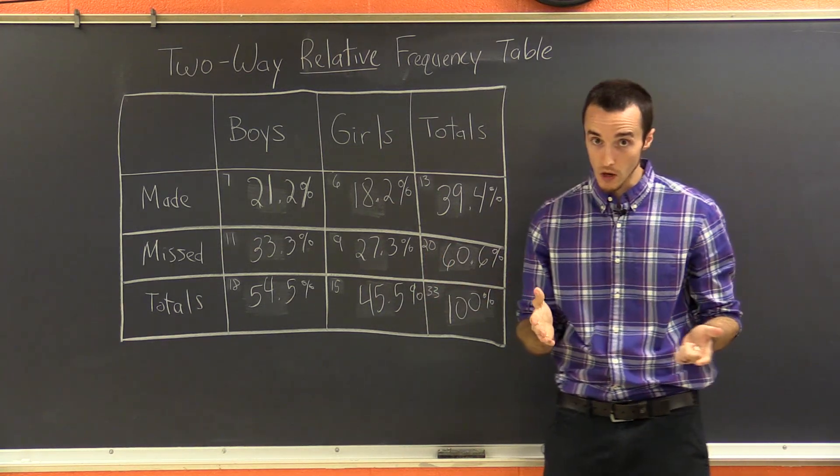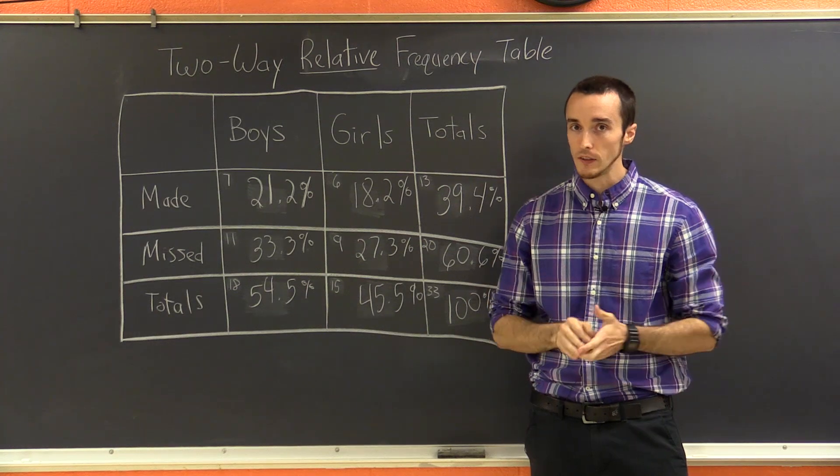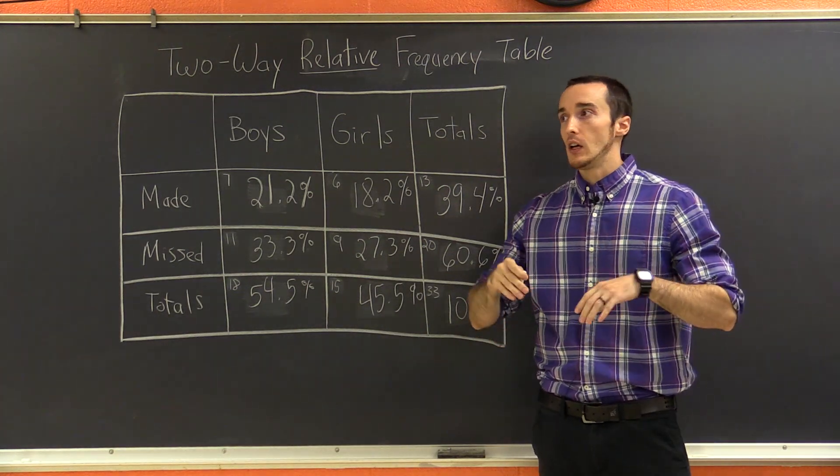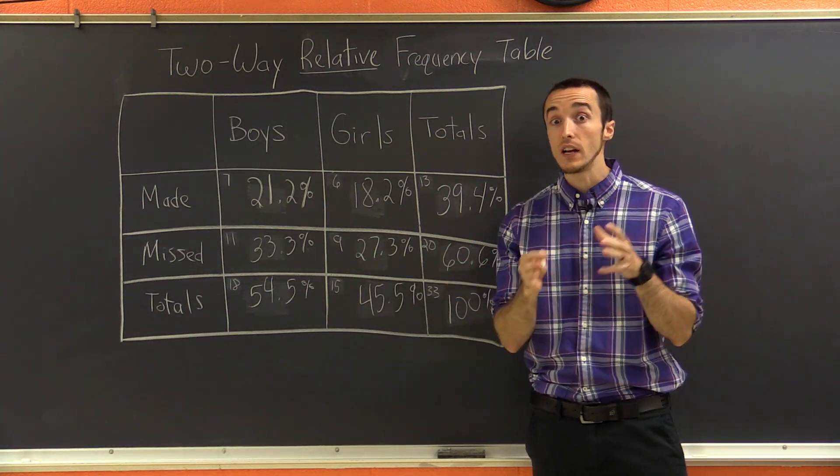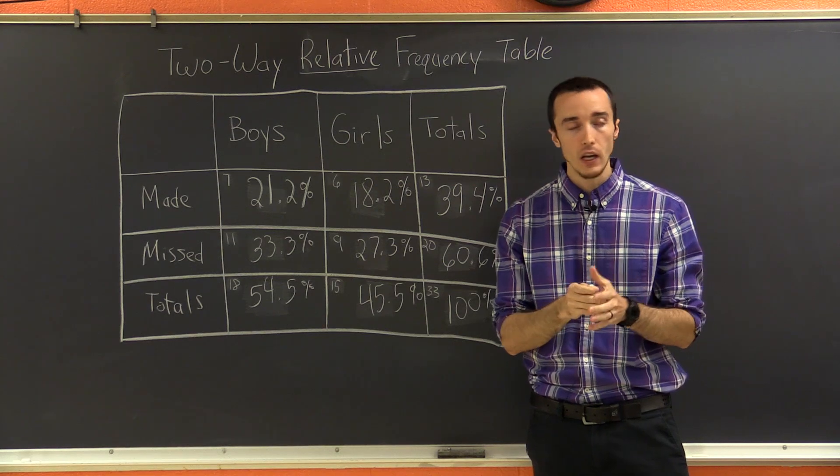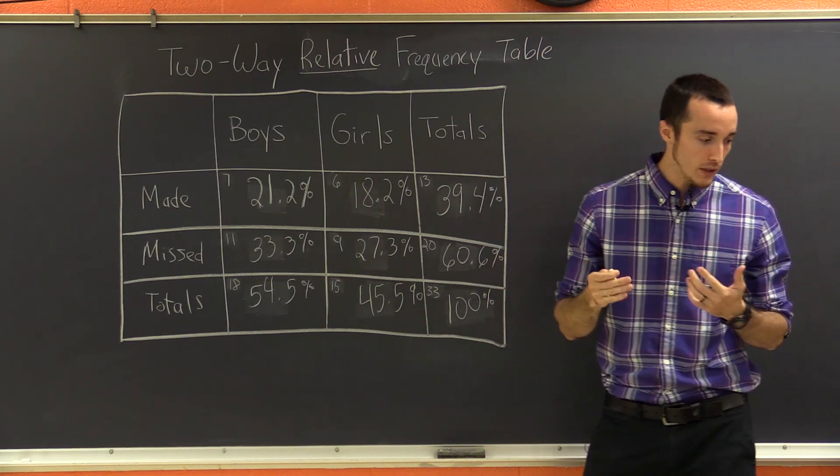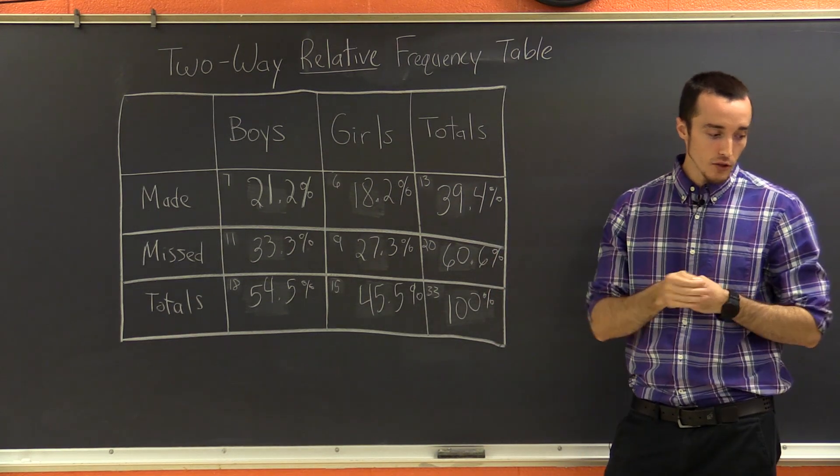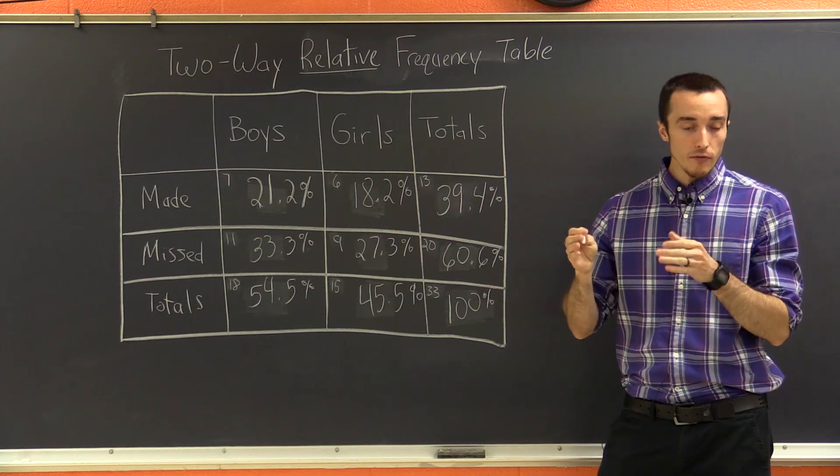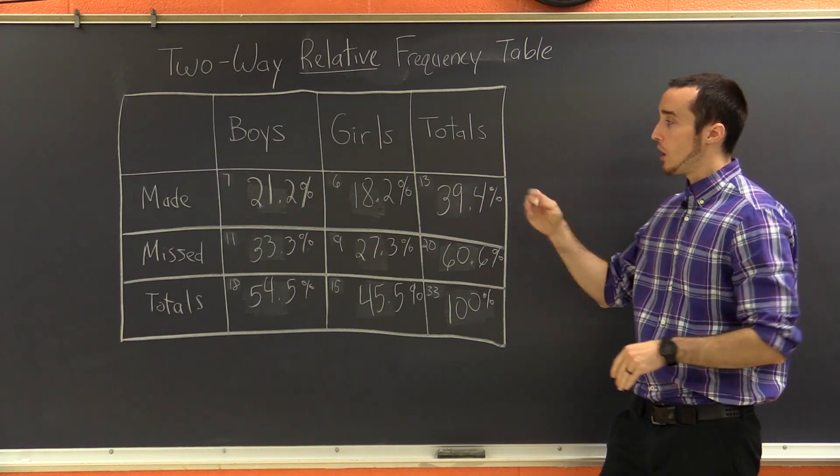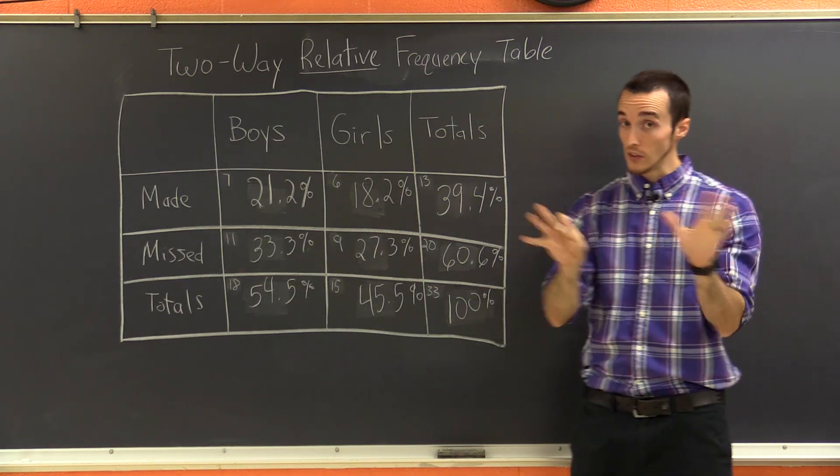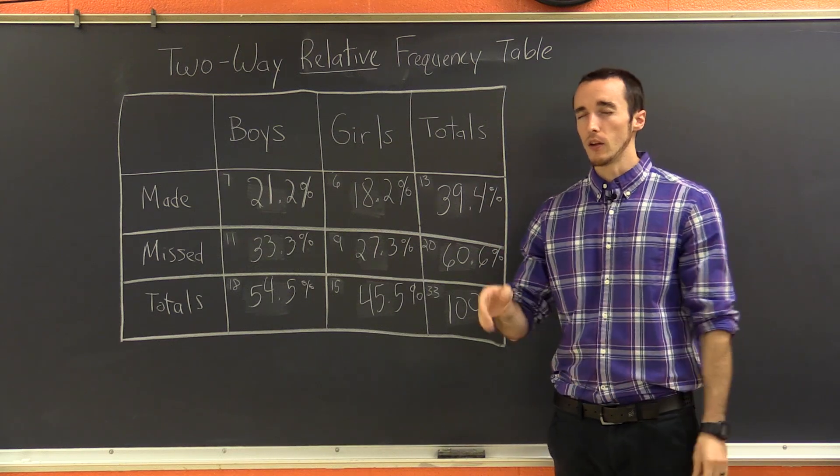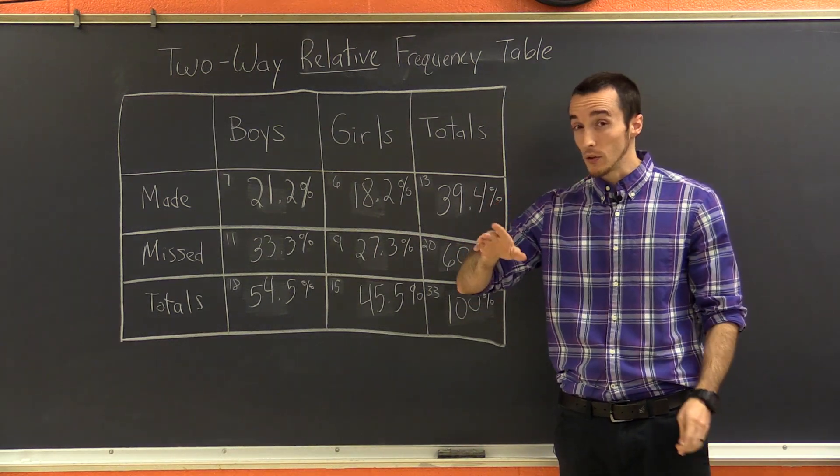And then the tricky one, conditional relative frequency. This is the probability of an event given a specific condition. So for instance, I had one written down here. I said, what is the conditional probability that if you are given a girl, she also missed a basket? So this is a conditional relative frequency. In other words, if I'm only dealing with girls,